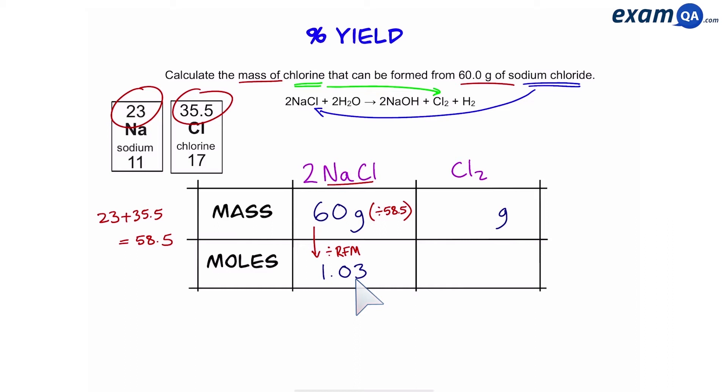Now that we have the moles of sodium chloride, let's work out the moles of chlorine. To do that, we're going to use the big numbers to work out the ratio. As you can see, it's a two to one ratio, two sodium chlorides for one chlorine. That means we're dividing the number of moles by two. So do 1.03 divided by two and that gives us 0.52 moles.